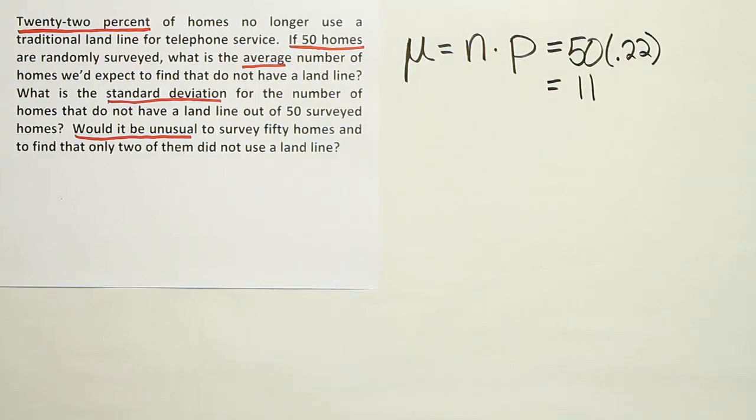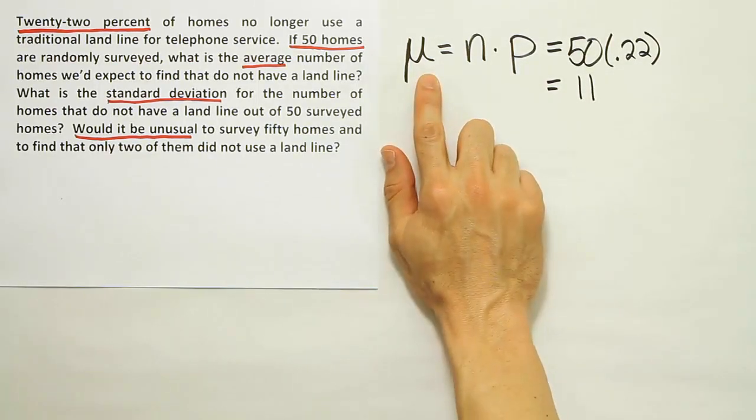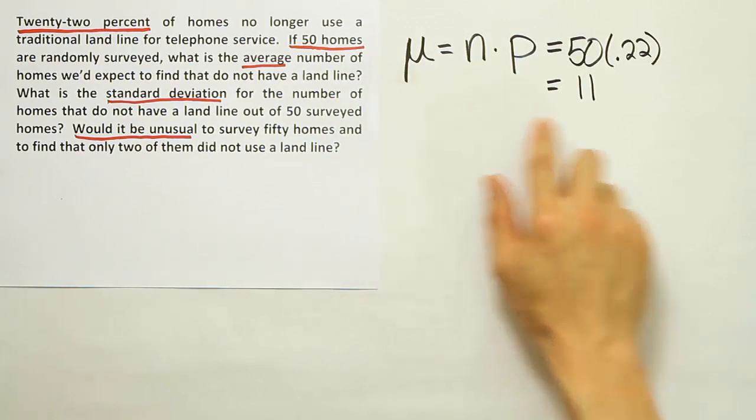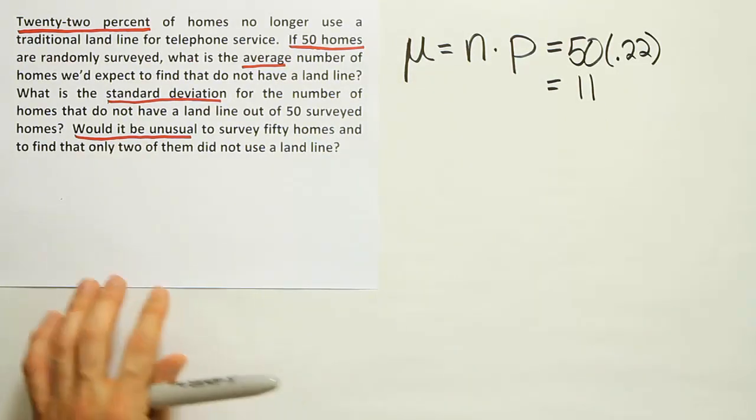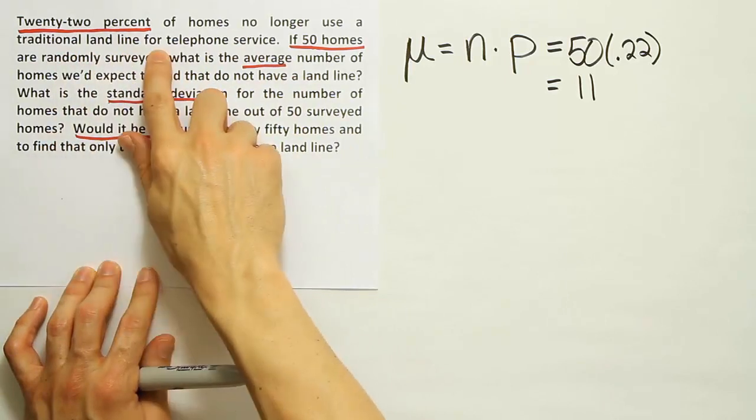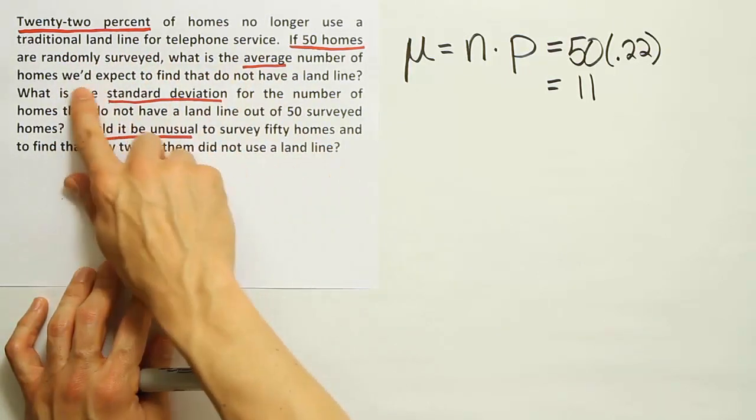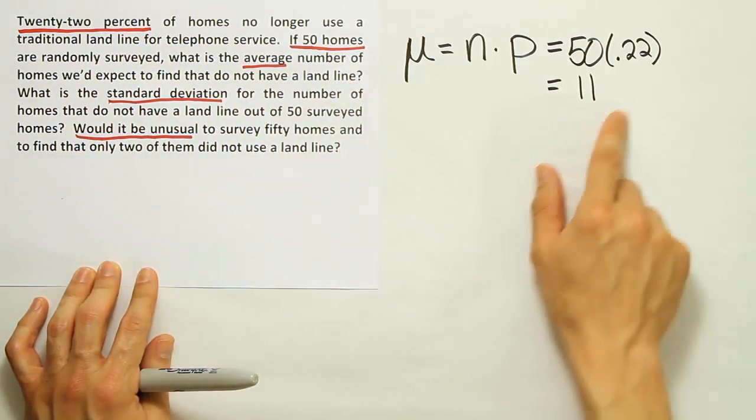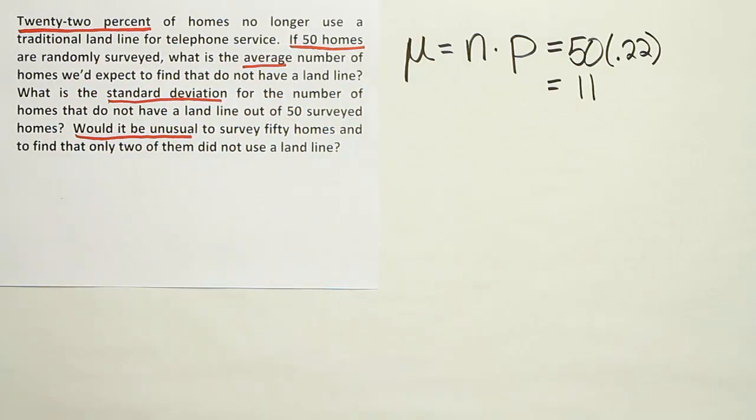Our solution for the problem turns out to be 11. The important thing is that now we know the average number of homes that would no longer use a traditional landline for service. 22% of homes no longer use a traditional landline. What is the average number of homes we expect to find that do not have a landline? It would be 11 homes out of the 50 surveyed. Typically we'd get 11 out of 50.